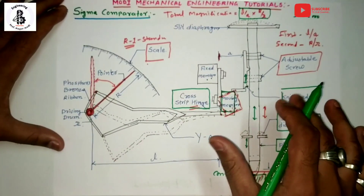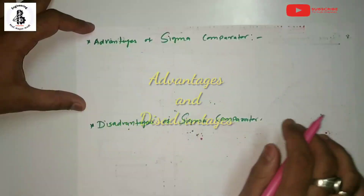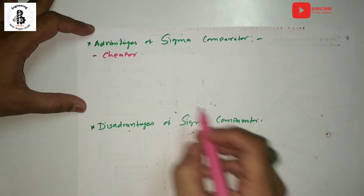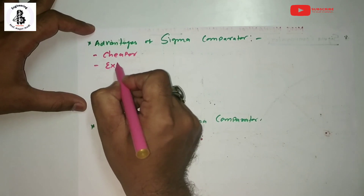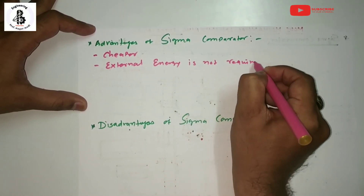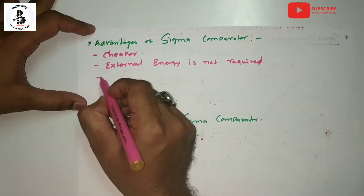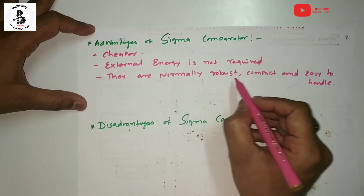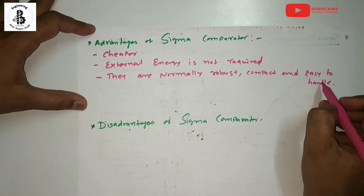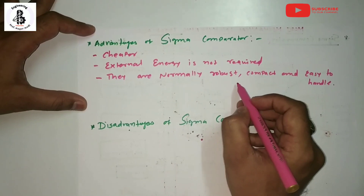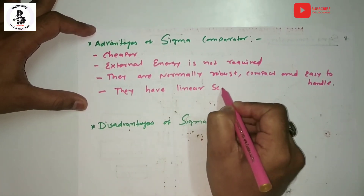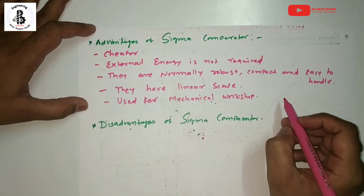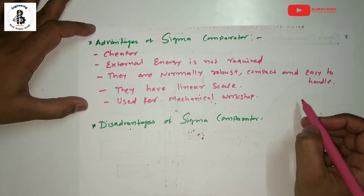Advantages of Sigma comparators: First, they are cheaper compared to other comparators. Second, they do not require any external energy. Third, they are normally robust, compact, and easy to handle. Fourth, they have a linear scale and are used in mechanical workshops for ordinary conditions.